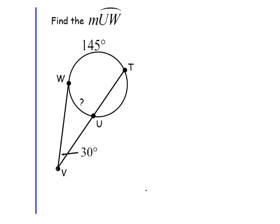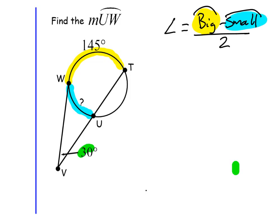In this example, I have a secant TV and a tangent WV, and I want to figure out this arc. Let's write down our formula one more time. The angle is equal to the big arc minus the small arc divided by 2. In this problem, what am I given? I'm given the big arc, 145. I want to discover the small arc, and I am also given the angle. So let's plug in what we know. 30 is the angle outside the circle. The big arc is 145 minus the small arc, which is our unknown, so we put an x and we divide it by 2.